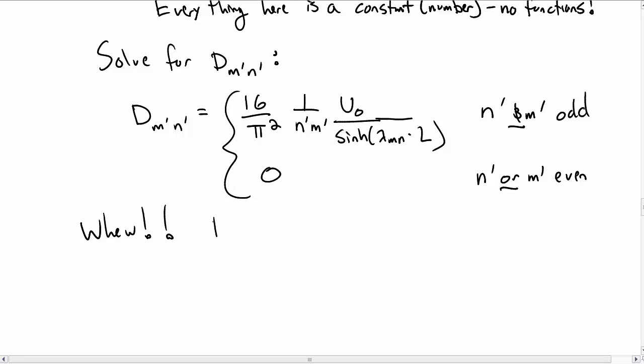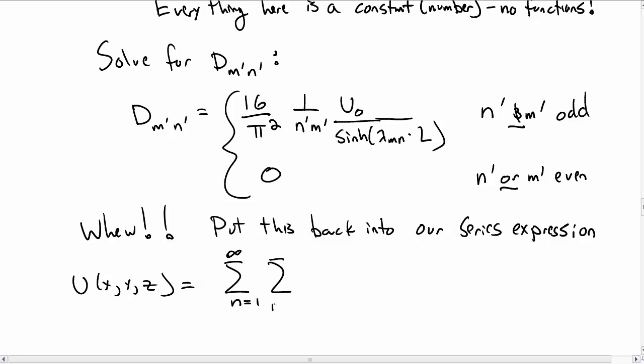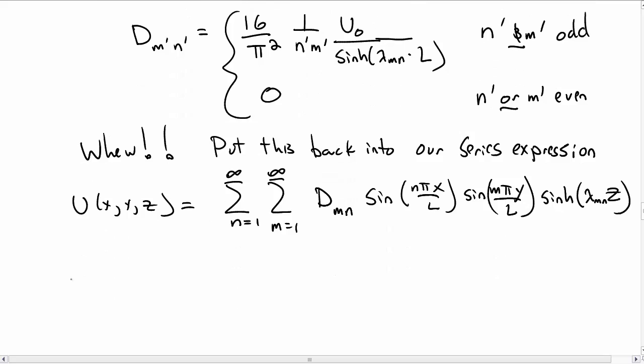Wow, okay, that was a lot of work, but let's now put this back into our series expression for the temperature u(x,y,z). So u(x,y,z) that we had above, I'm just going to rewrite it first before we plug in for d_mn. We had the double sum: d_mn and the sin(nπx/L)sin(mπy/L)sinh(λ_mn·z), and now we plug in our d_mn into this expression.